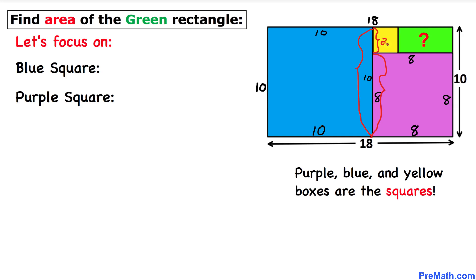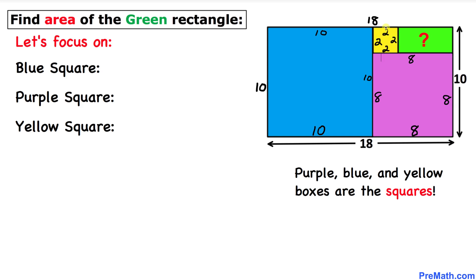Now let's focus on the yellow square. Since its side length is 2 and all sides of a square are equal, each side is 2 units. We can see that the total length on this side is 8 units and the small portion is 2, so the remaining length is 8 minus 2, which equals 6 units.